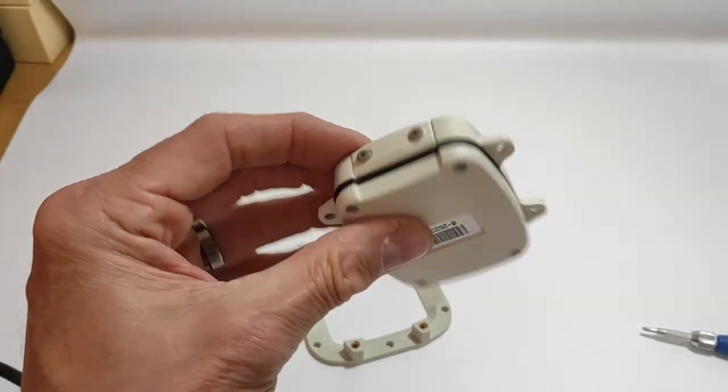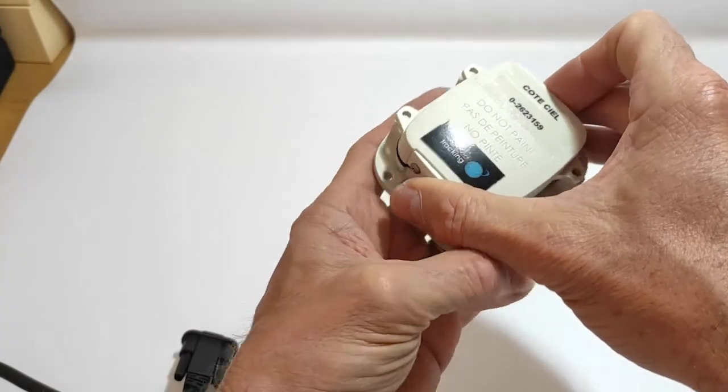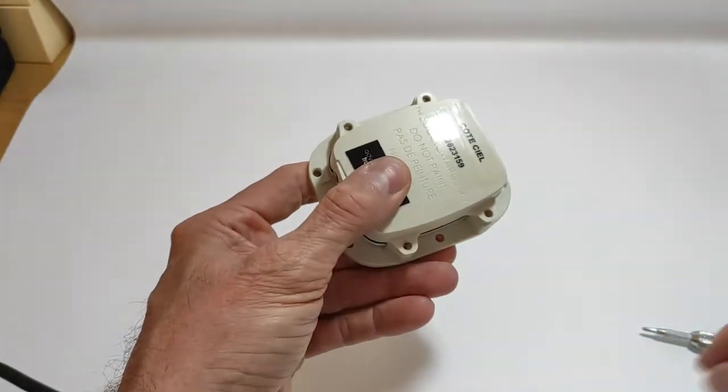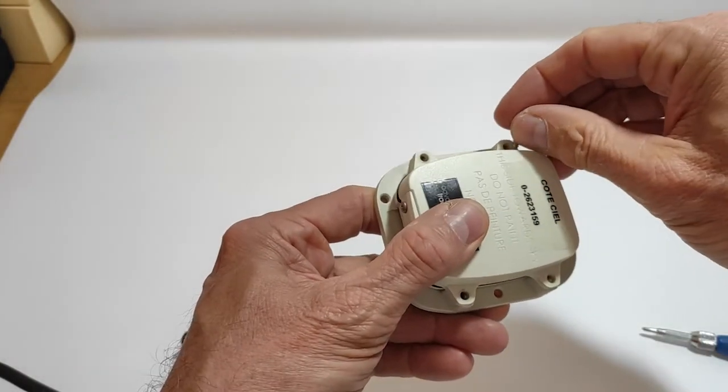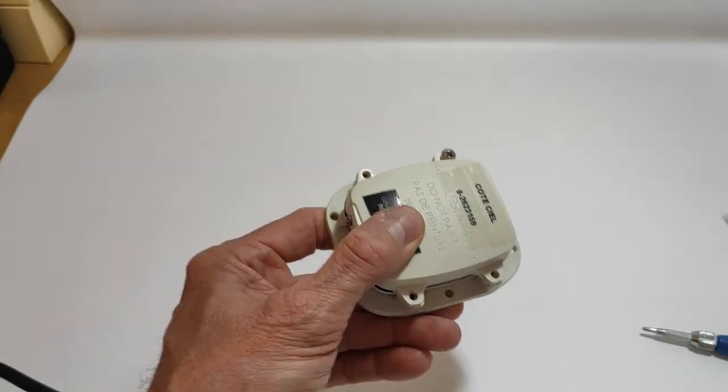Once it's closed, you just put back the device on its support that's fixed to the boat, and you are once again screwing it back with four screws.